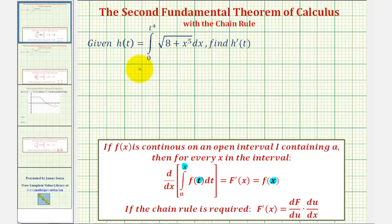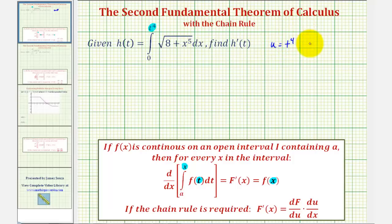So because our upper limit of integration is t to the fourth, we're going to make a substitution and let u equal t to the fourth, which means u prime, or du/dt, would be equal to four t to the third.